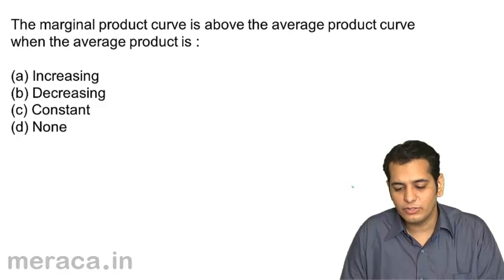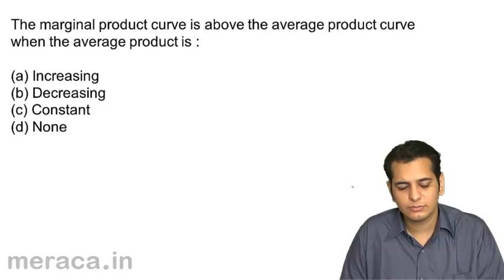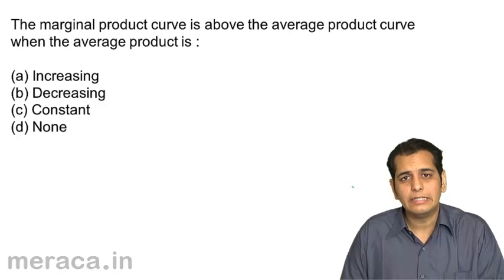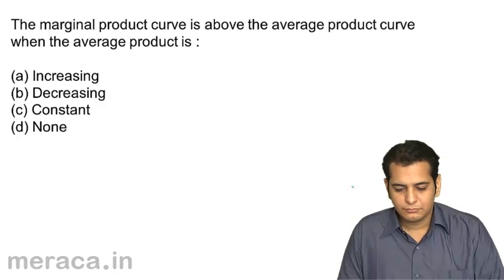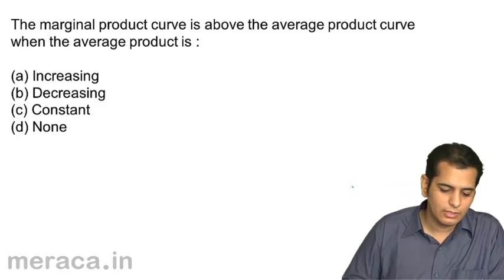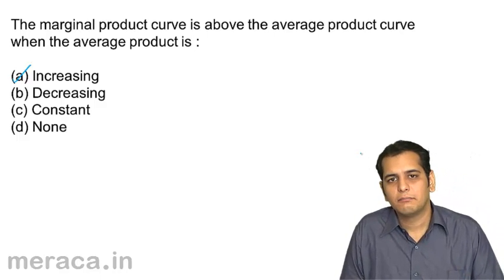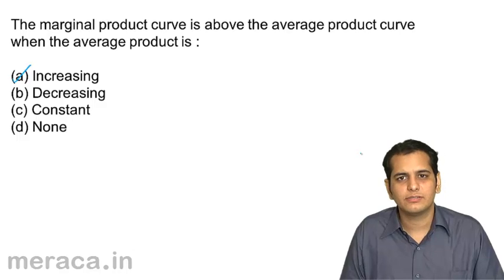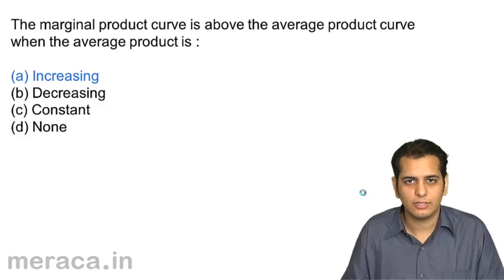The marginal product curve is above the average product curve when the average product curve is: a) increasing, b) decreasing, c) constant, or d) none of the above. It's increasing. When both are increasing, the marginal product curve is always above the average product curve.